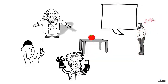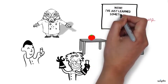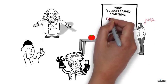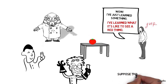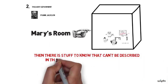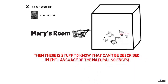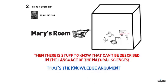Now, one thing it would be very natural for Mary to say in this context is, wow, I've just learned something. I've learned what it's like to see a red thing. That was something I didn't know before. Let's suppose that's right. If that is right, then it would seem as if there's stuff to know that can't be described in the language of the natural sciences. That's what's nowadays known as the knowledge argument for thinking that there are aspects of the world that can't be described in the language of the natural sciences, that are non-physical.